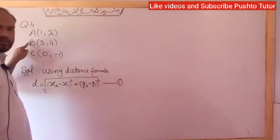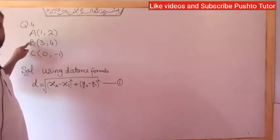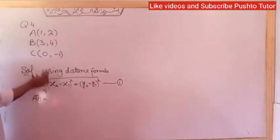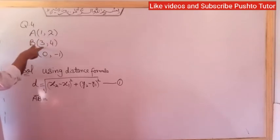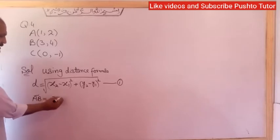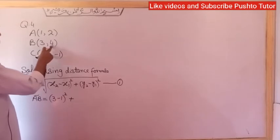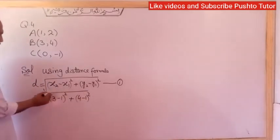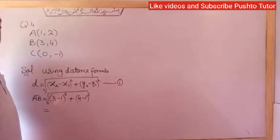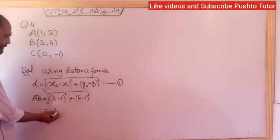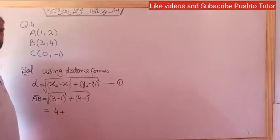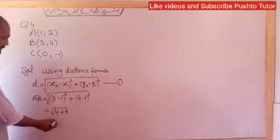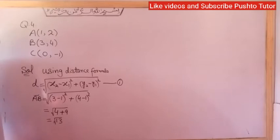Now finding the distance AB. For A and B, x2 - x1 is 3 minus 1 = 2, whole square gives 4. Plus y2 - y1 is 4 minus 1 = 3, square gives 9. So under square root of 4 + 9 = 13. Therefore AB = √13.